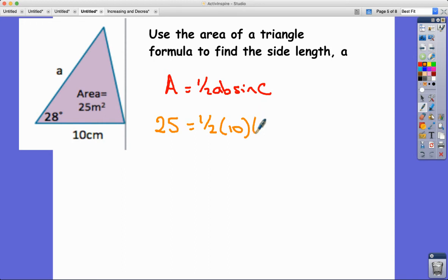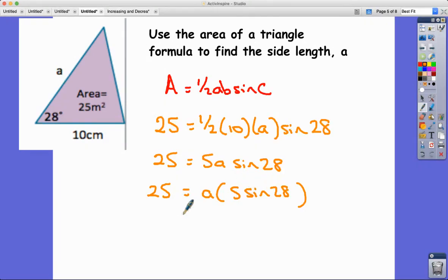I'm just going to try and simplify. Half of 10 is 5, so it's 5a sine 28. Remember that this is just all a product, so this is just a times 5 times sine 28 if I just rearrange it. Then I can say that a would be equal to 25 divided by 5 sine 28.